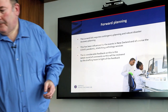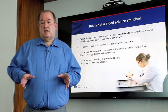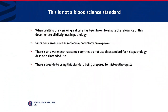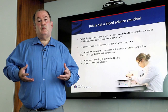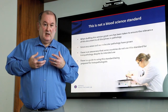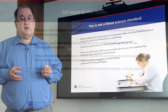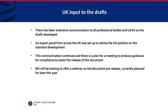This is not a blood sciences standard — one of the criticisms of the previous version was that it was written for blood sciences. We've taken great care to ensure relevance to all disciplines in pathology, and things like molecular pathology have really grown since 2012. We're also aware it's intended for histopathology, though some countries don't use it for that — a guide for histopathologists is being prepared. We've engaged with many genetics networks in the development of this standard and have gathered all disciplines to make sure the wording is fit for purpose. There's been extensive communication with all professional bodies as the drafts have developed, and we have an expert panel drawn from industry and across the disciplines in pathology to advise on the UK position.